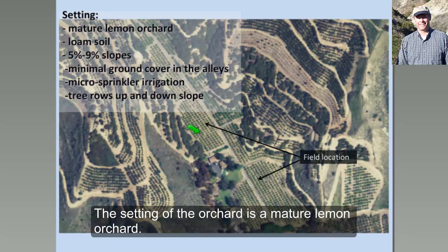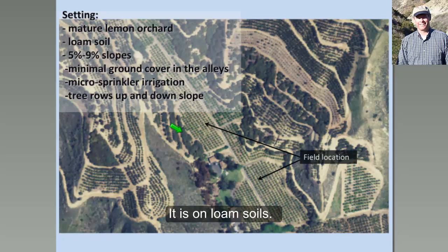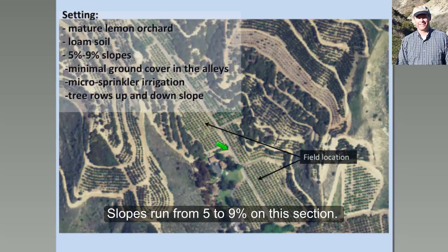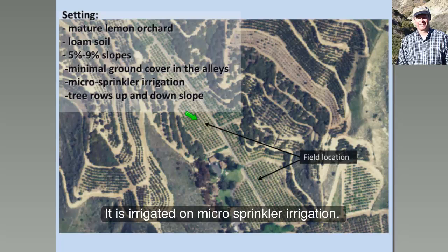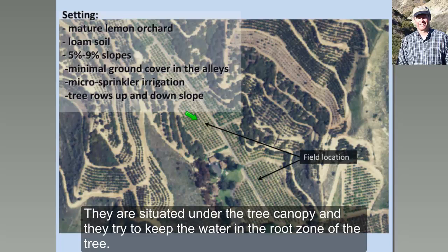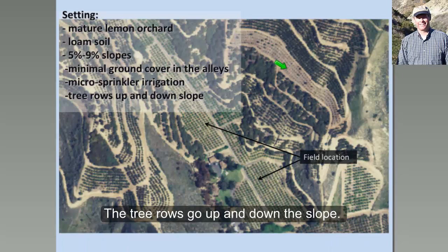The setting of this orchard is a mature lemon orchard on loam soils. Slopes run anywhere from 5% to 9% in this section. There's minimal ground cover in the alleys — in this aerial photo you can see the bare soil in the alleys between the trees. It's irrigated on micro sprinkler irrigation, little micro sprinklers which are low volume and low pressure. The sprinklers are situated up under the tree canopy to keep the water into the root zone of the tree, and the tree rows are running up and down slope.